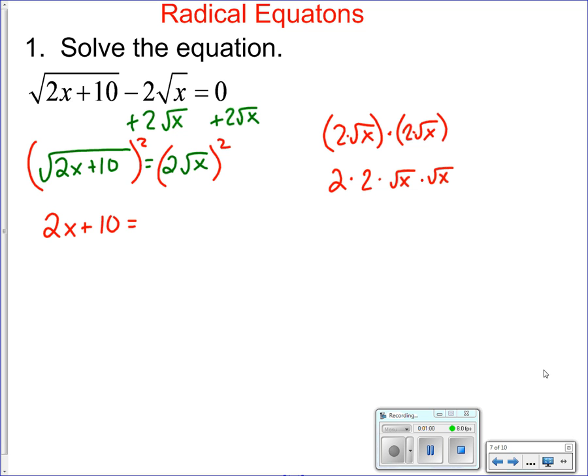So 2 times 2 is 4, √x times √x is x. If I subtract 2x from both sides and divide by 2, you get x equals 5. Now because you are squaring with radical equations, you need to make sure there's not an extraneous solution, so make sure this 5 works in your equation.